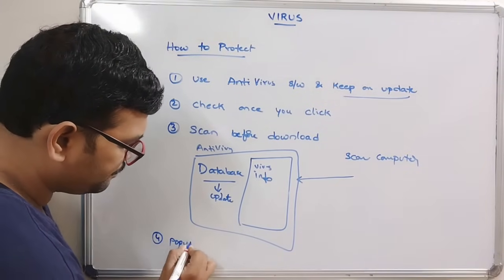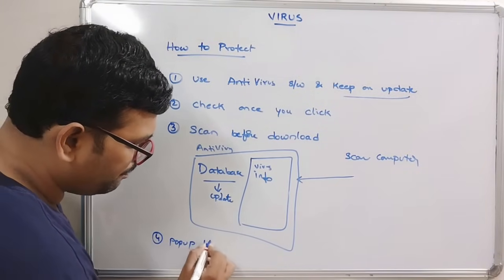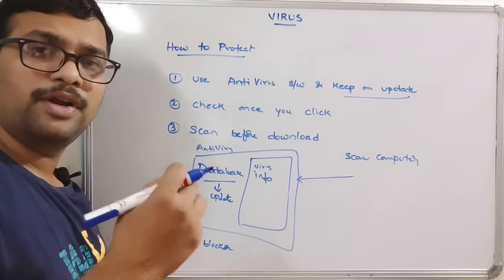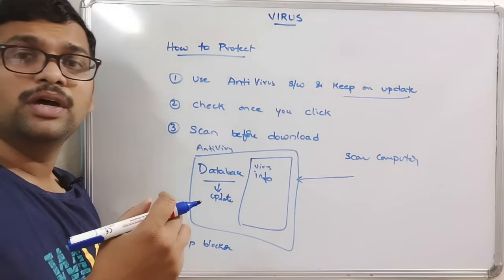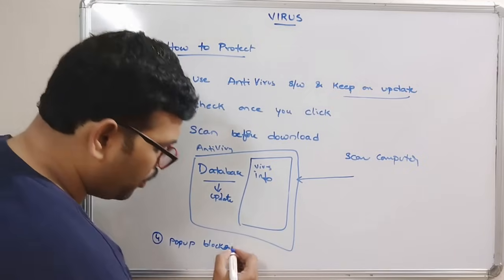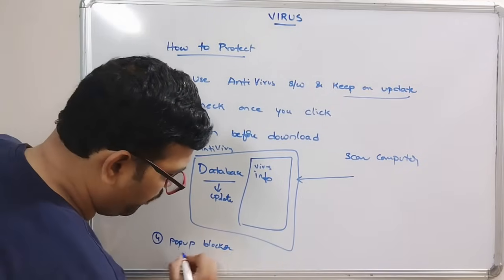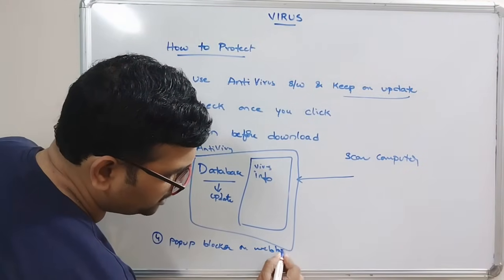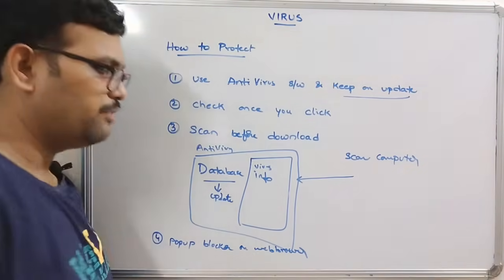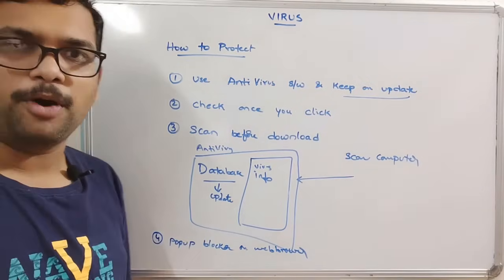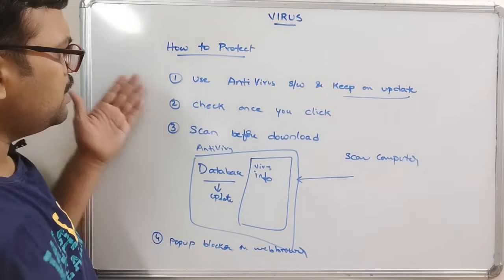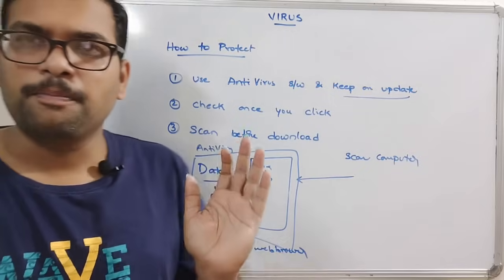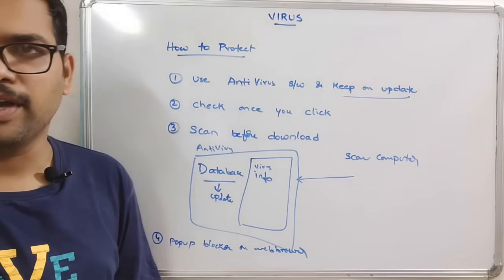The fourth protection step is to use a pop-up blocker in your browser. Just enable the pop-up blocker on your web browser so it will avoid unwanted pop-ups. These are the key things we need to follow to protect our computer from viruses.